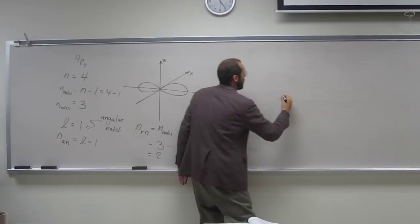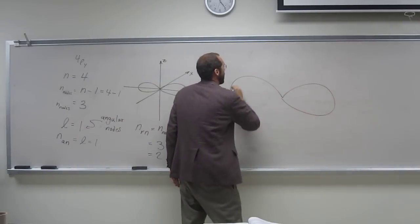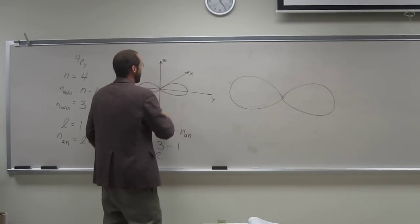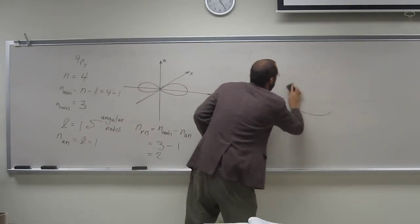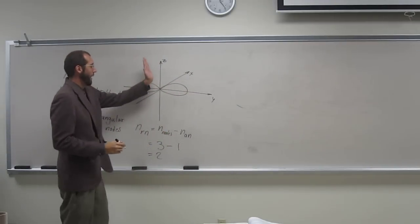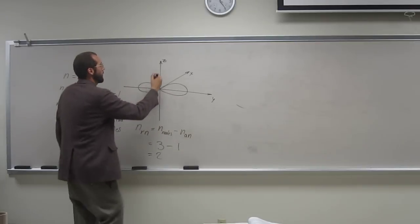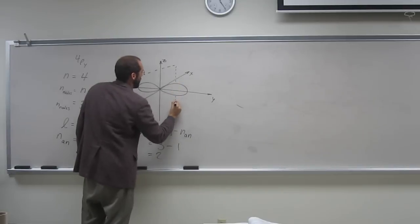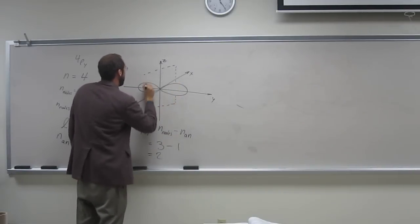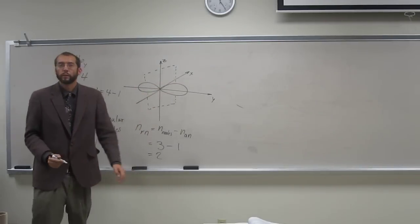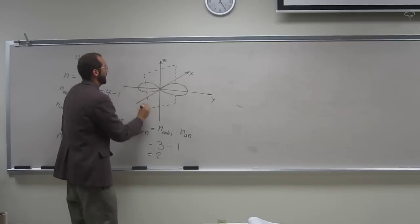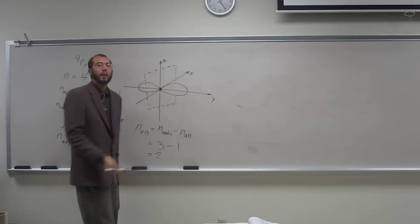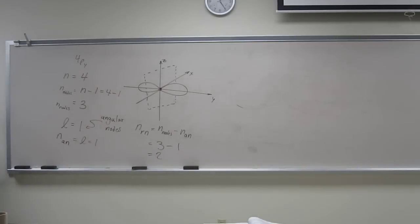So let's draw a picture and show the nodes. In this case, what we call the angular node is the one on the plane there, going through that ZX plane. Do you see that? A node means zero electron density, a place of zero electron density.